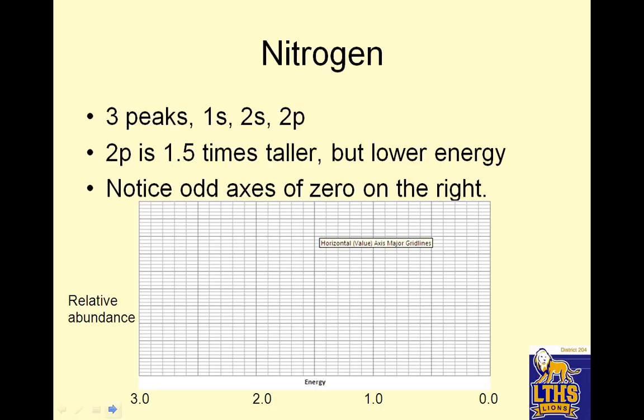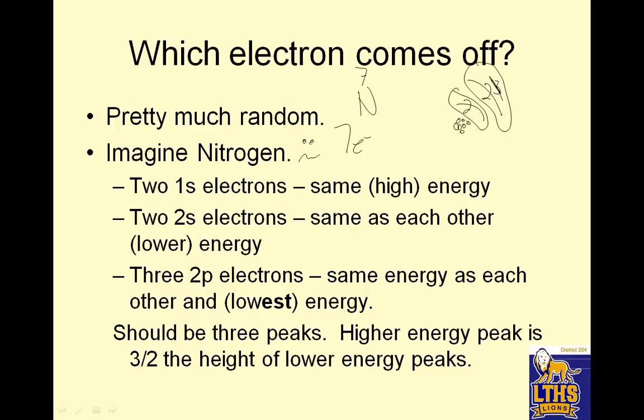So there should be three peaks. Two on the first level, another two, and then a three. The high energy peak is three halves the height of the lower energy peak. Now that's actually not right. It's not the higher energy ones like that, but let me show you what it is.